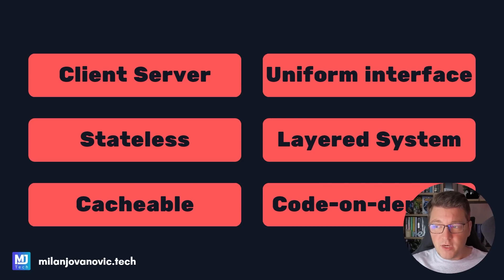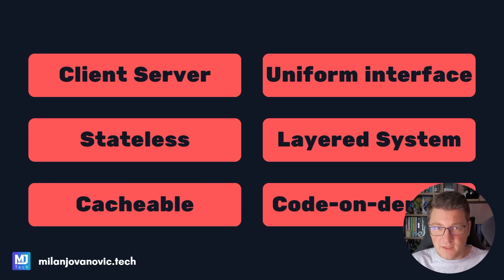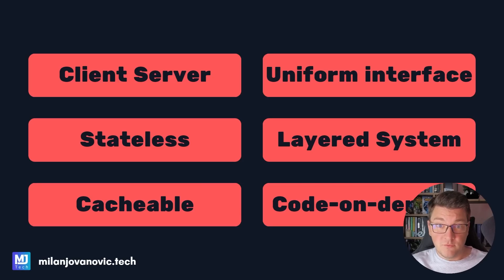The last REST constraint is code on demand. This allows you to send an executable piece of code as an API response to the client, where the client can execute it — this could be a UI widget or a piece of JavaScript code. This constraint is completely optional and not required to build a RESTful API, and you will very rarely see it used in the wild. So the six RESTful API constraints are: client-server, stateless, cacheable, uniform interface, layered system, and code on demand.